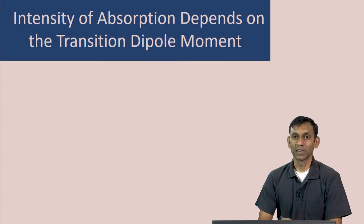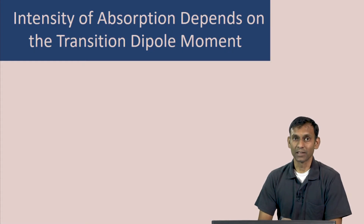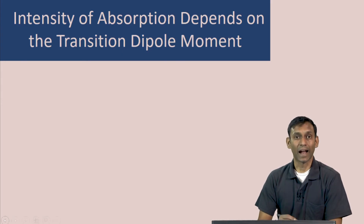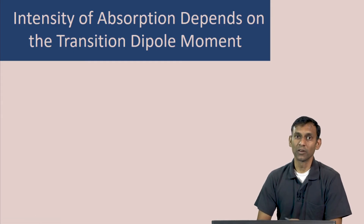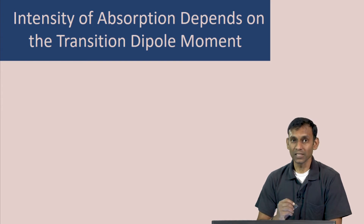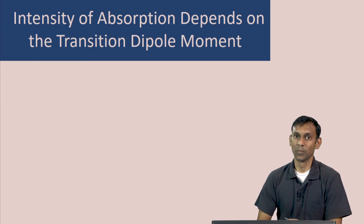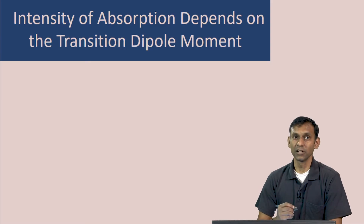One of the most important ideas in spectroscopy is that the intensity of absorption or emission of light by an atom or a molecule depends on the transition dipole moment of the atom or molecule. Let us look at what this transition dipole moment is first, and then in this lecture we will derive that the intensity depends on this quantity.